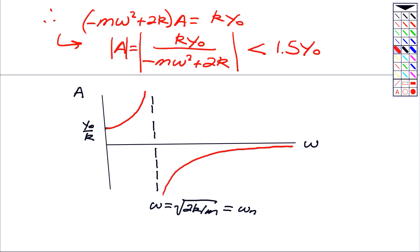What our goal is, is to find the values of omega such that the amplitude A, the magnitude, is no larger than 1.5 Y naught. It looks like I made a mistake here, so let me correct this. This here, I think I said it right, but I wrote it down wrong. That should be Y naught over 2.